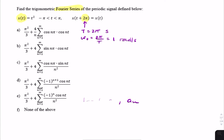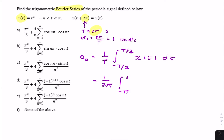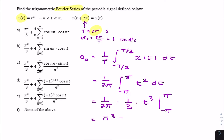So how do we find a₀? a₀ is the DC value — it's the average value. By definition it's 1 over T, the integral from minus T/2 to T/2 of x of t dt. Since T is 2π, that's 1 over 2π, integral from minus π to π of t² dt. That's 1 over 2π times 1/3 times t³ evaluated from minus π to π, giving π³ minus (minus π³) over 6π, which gives π² over 3. So a₀ equals π²/3.